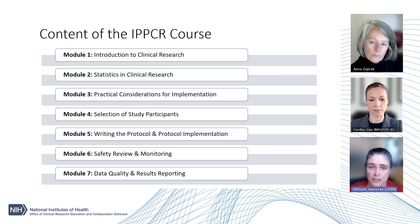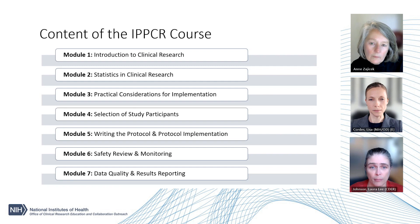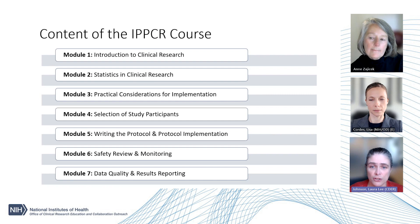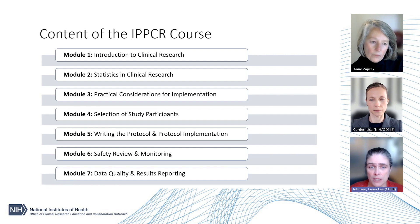The course content is divided into seven modules. Module 1 is an introduction to clinical research, which includes an overview of product regulation and ethics in clinical research. Module 2 focuses on statistics and includes topics ranging from study designs to hypothesis testing.